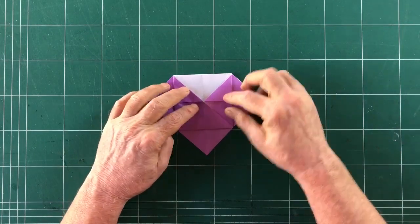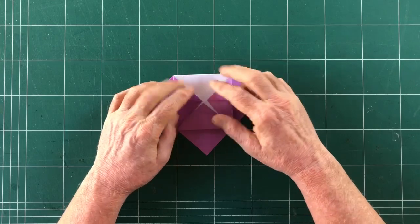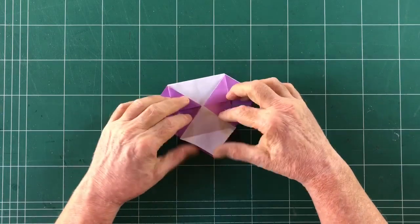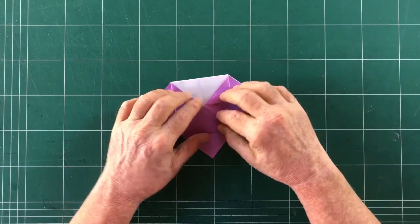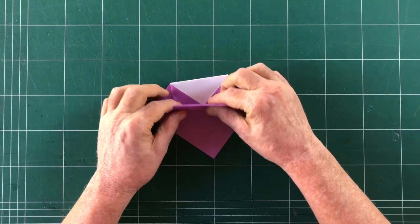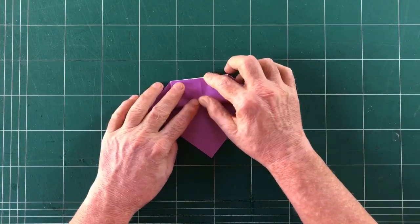And again with the bottom corner, fold that in. So most of the colour has disappeared and now, sorry, most of the white has disappeared because we can see the colour. And then finally fold this over and all the white has disappeared.